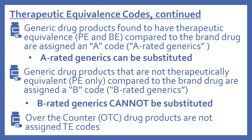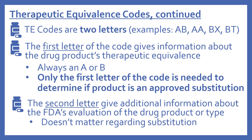A-rated generics can be substituted. Generic drug products that are not therapeutically equivalent — meaning they only have pharmaceutical equivalence — are assigned a B code and are known as B-rated generics. B-rated generics cannot be substituted. Over-the-counter drug products are not assigned TE codes. The TE codes are two letters — examples include AB, AA, BX, and BT, among others. The first letter gives information about therapeutic equivalence and is always A or B. Only the first letter is needed to determine if a product is an approved substitution. The second letter gives additional information about the FDA's evaluation or the drug type, and does not matter for substitution decisions.